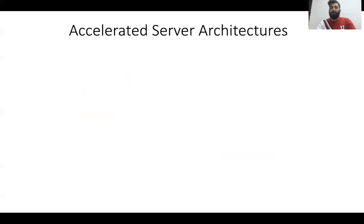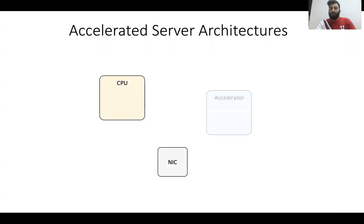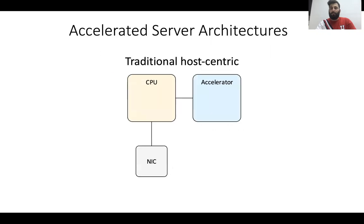I will focus on three main components in the accelerated server: the CPU, the network interface card, and the accelerator. If we look at the traditional architecture, which we call the host-centric architecture, the CPU sits in the center and all the peripheral devices are connected to the CPU, which means that if one device needs to communicate with another device, it needs to do that through the CPU.